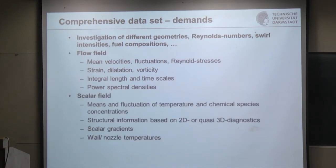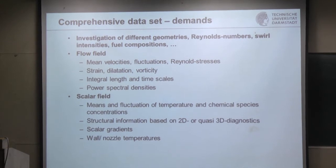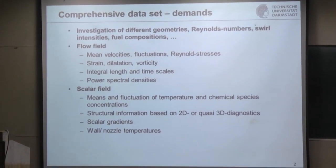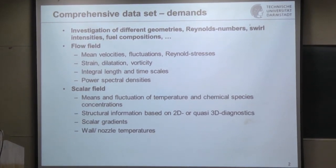After gaining a basic understanding of the turbulence field, you should try to get a detailed insight into the scalar field — meaning concentration values and temperatures. Again, you start with single-point statistics: means and fluctuations. Then, very often you are interested in structural information, which is more visualization — a relatively easy task to visualize, for example, the 2D distribution of certain radicals like OH radicals, to get an idea of where the flame is, where the flame brush is in premixed flames.